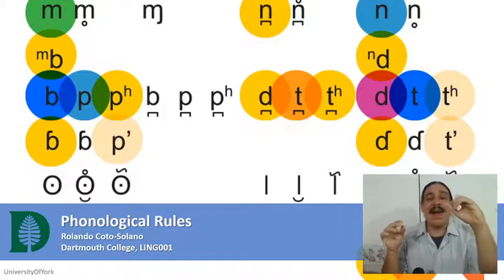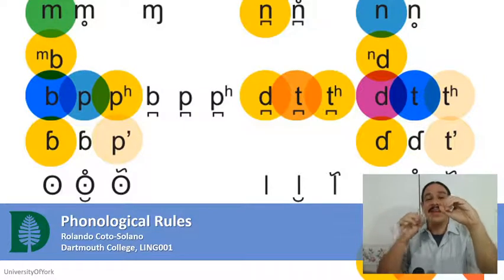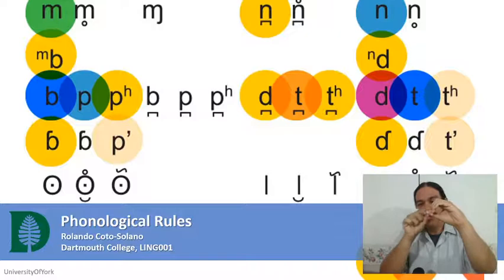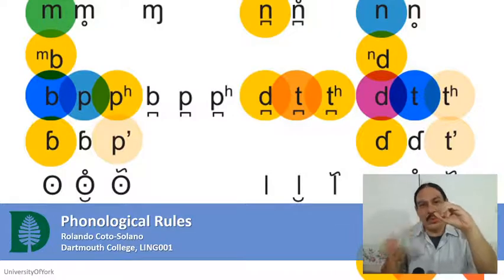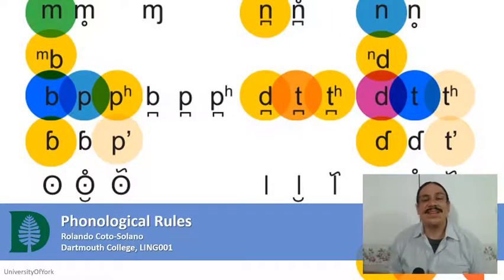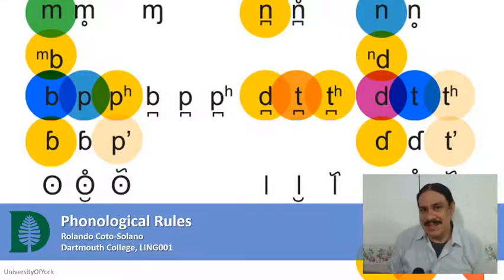You have the phonemes, but then how do you decide which is the right allophone for whatever word you're going to say? This is where phonological rules come in.